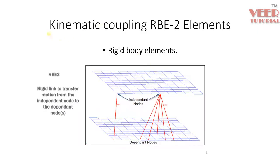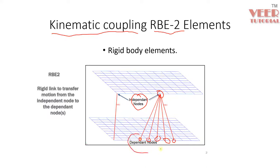Let's understand the Kinematic Coupling, also called the KinCoup or RB2 element. In the RB2 element, we have one single node and multiple nodes. That single node is called the independent node, and the multiple nodes through which it is connected are called the dependent nodes.